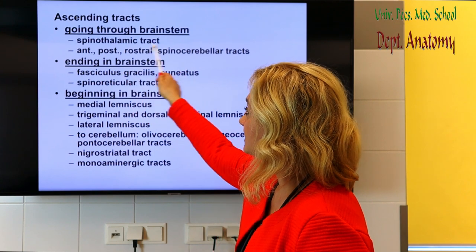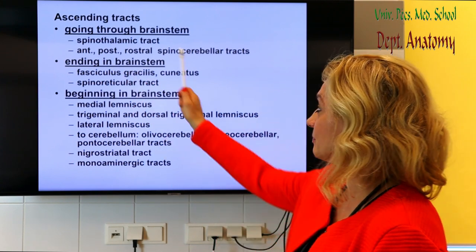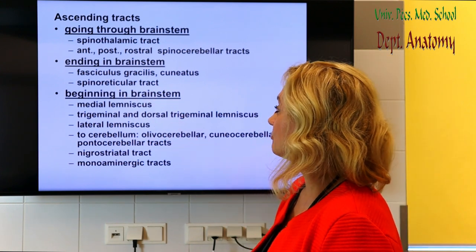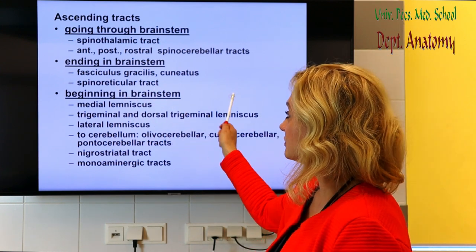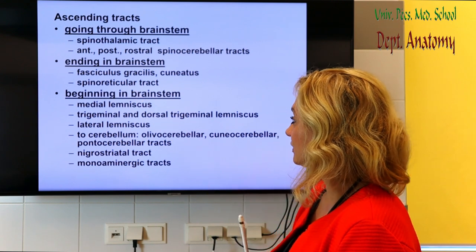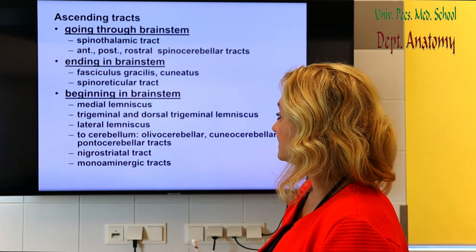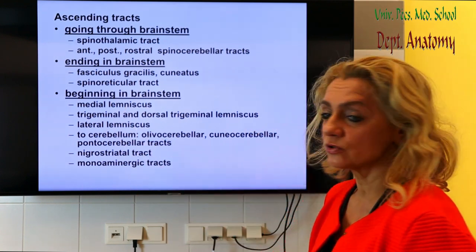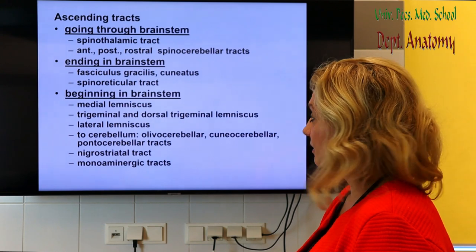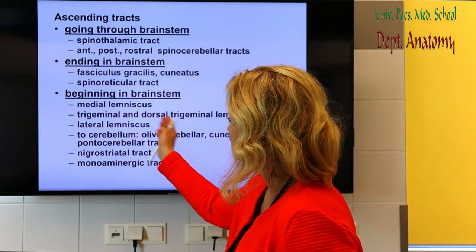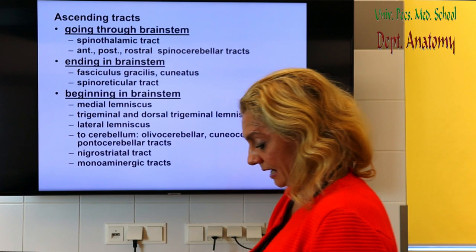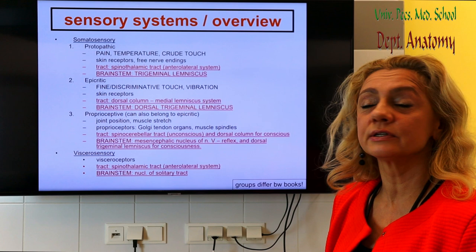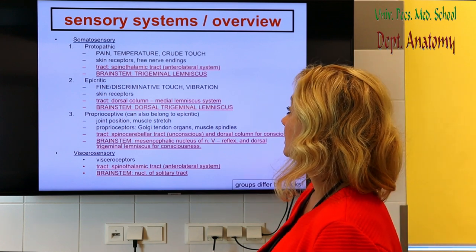We can group by those that go through the brainstem, like the spinothalamic tract or the spinocerebellar tract; those that end in the brainstem, like fasciculus gracilis, cuneatus, and the spinal reticular tract; or those that begin in the brainstem, like the medial lemniscus and the trigeminal, dorsal trigeminal, lateral lemniscus, etc.